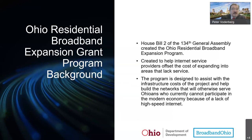The grant program was passed as House Bill 2 of the 134th General Assembly, which created the Ohio Residential Broadband Expansion Program. This program was created to help Internet service providers offset the cost of expanding into areas that lack service. It is designed to assist with the infrastructure costs of the project and help build networks that will serve Ohioans who currently cannot participate in the modern economy because of a lack of high speed Internet.